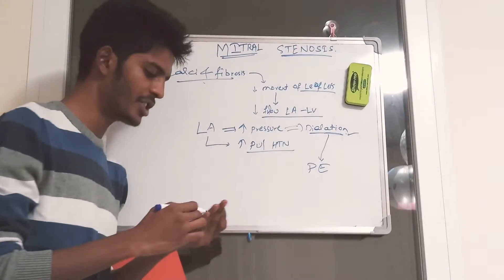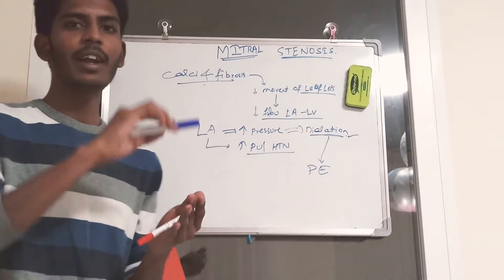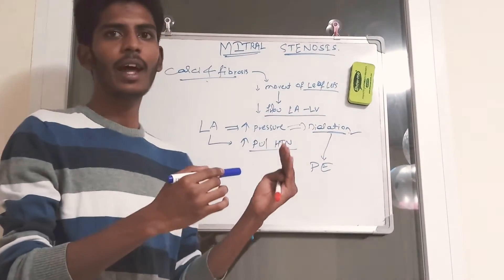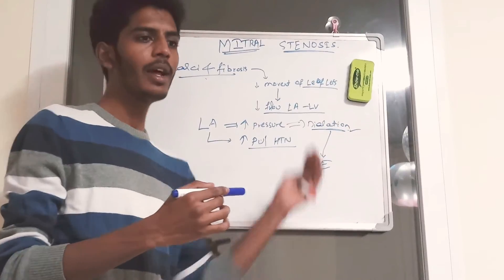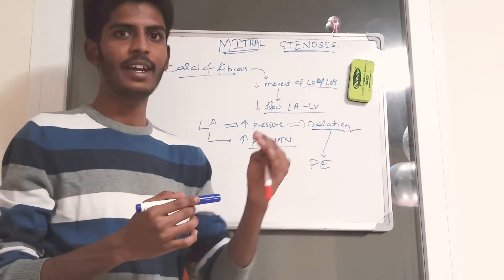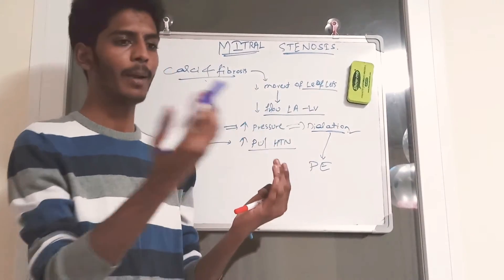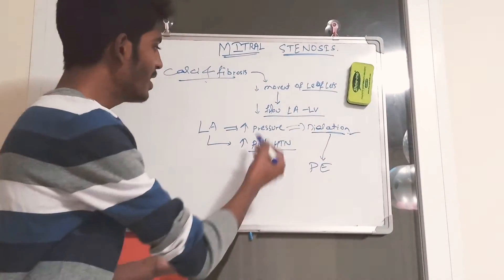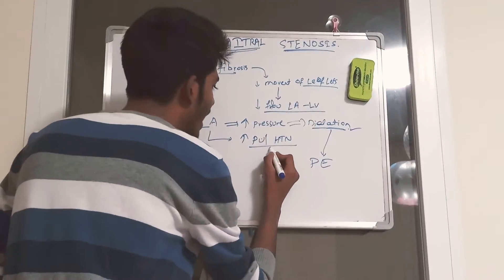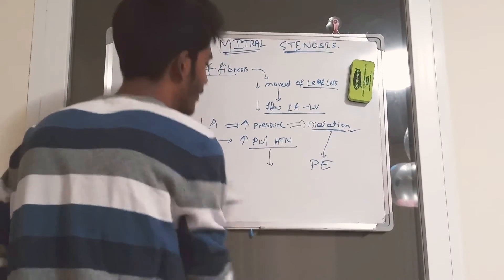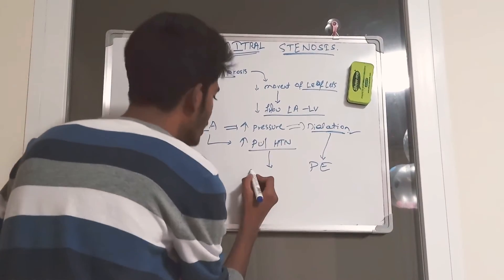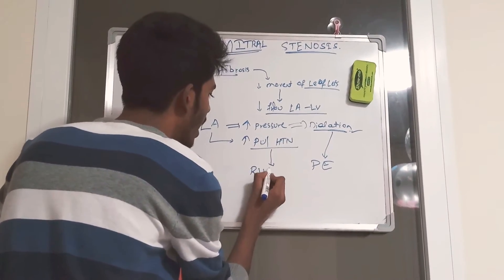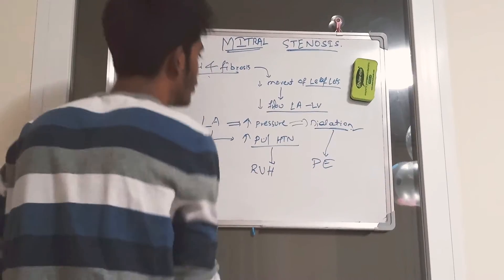When there is pulmonary hypertension, the vessels connected to the right side of the heart — the pulmonary circulation — are affected. This pulmonary hypertension can damage the right side of the heart and causes right ventricular hypertrophy.